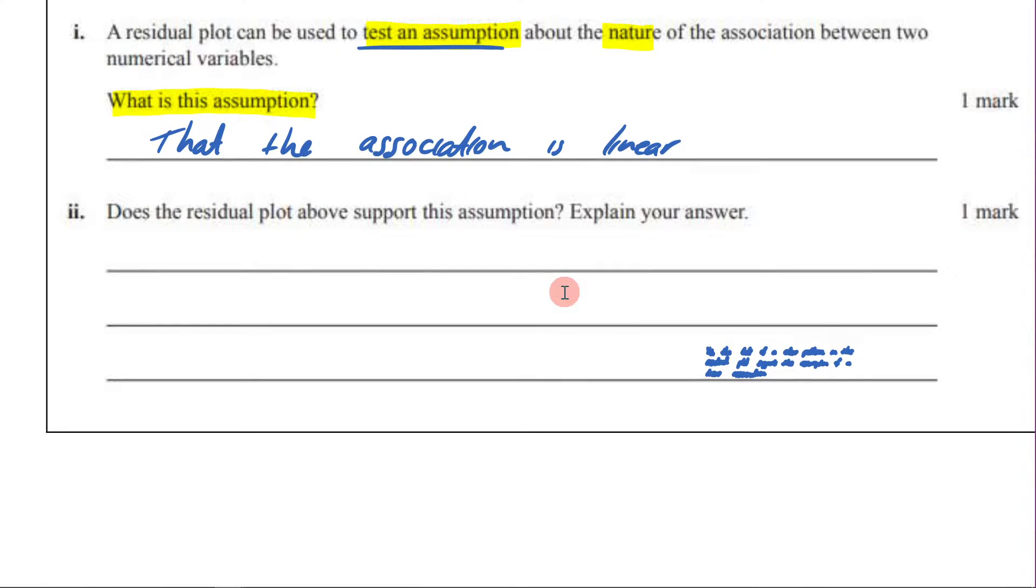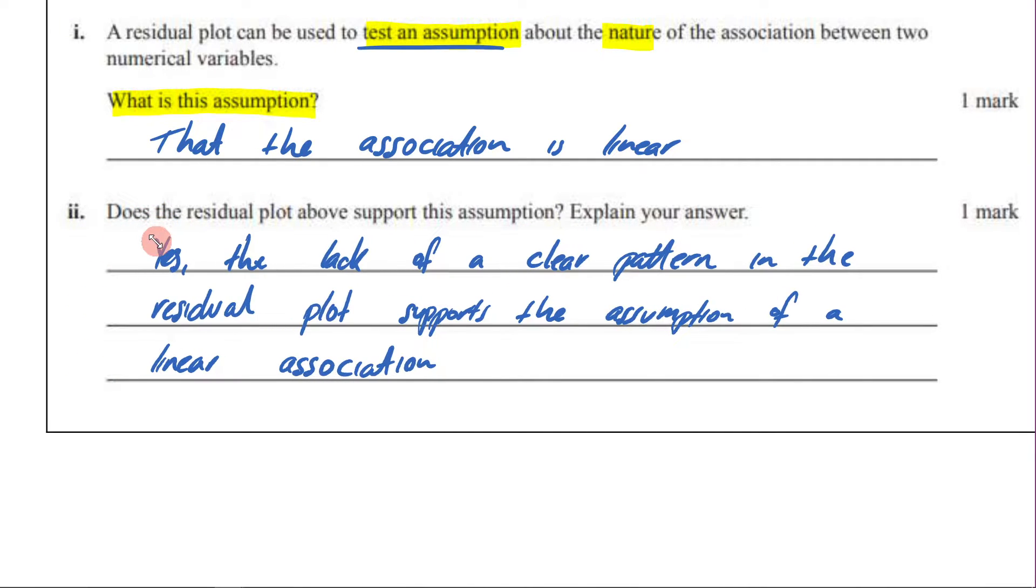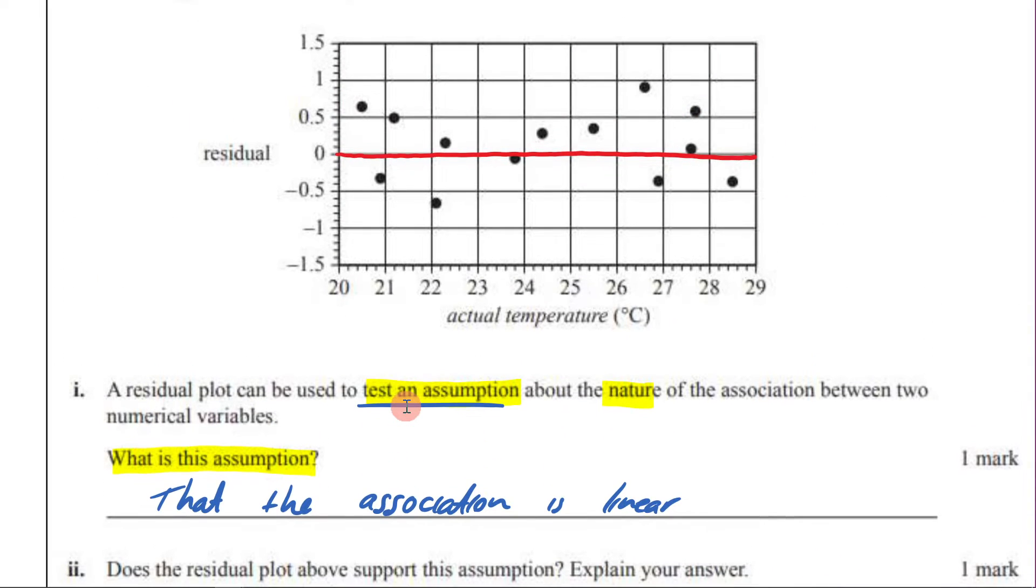So an ideal answer to this would be something along these lines. Here's one I've prepared earlier, so we can just read it through together. Yes, the lack of a clear pattern, there's the keyword, lack of a clear pattern in the residual plot supports the assumption of a linear association. So that would be your answer.